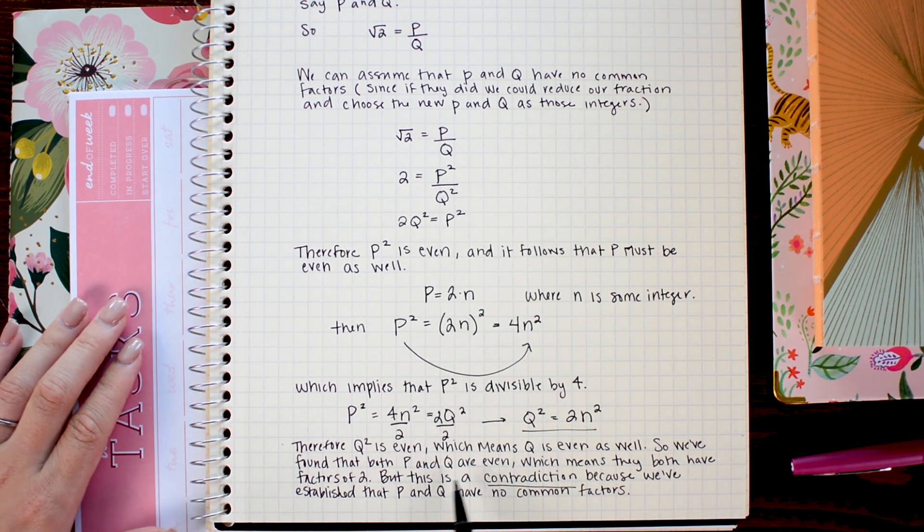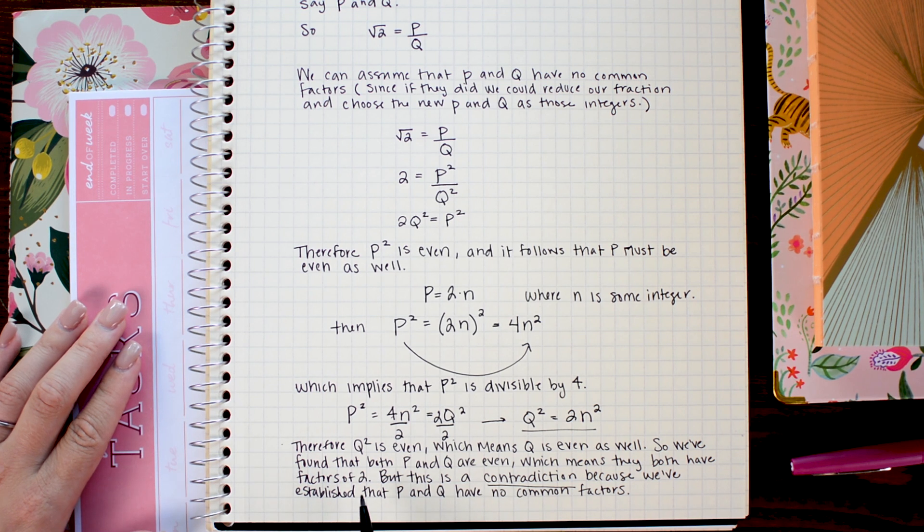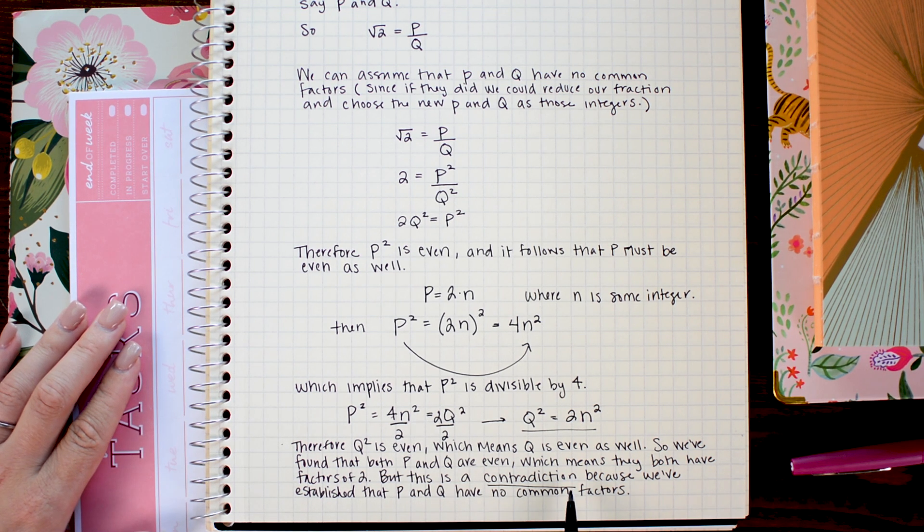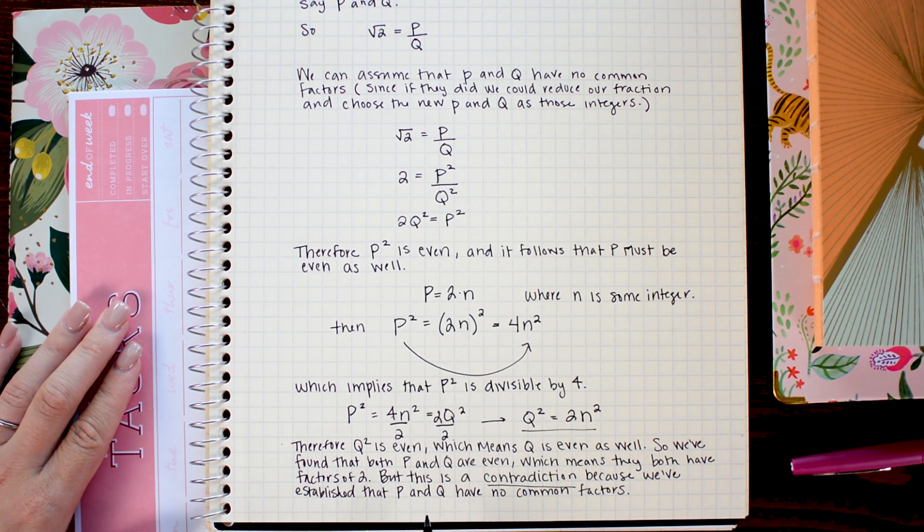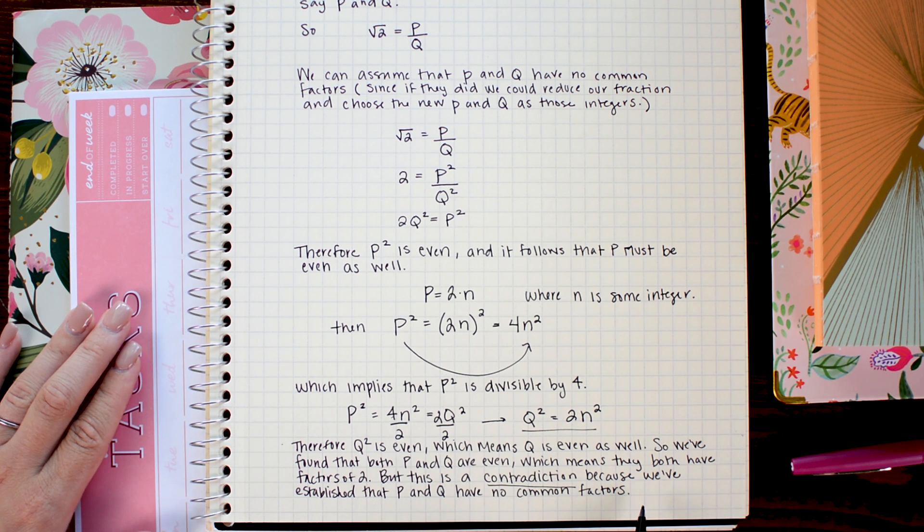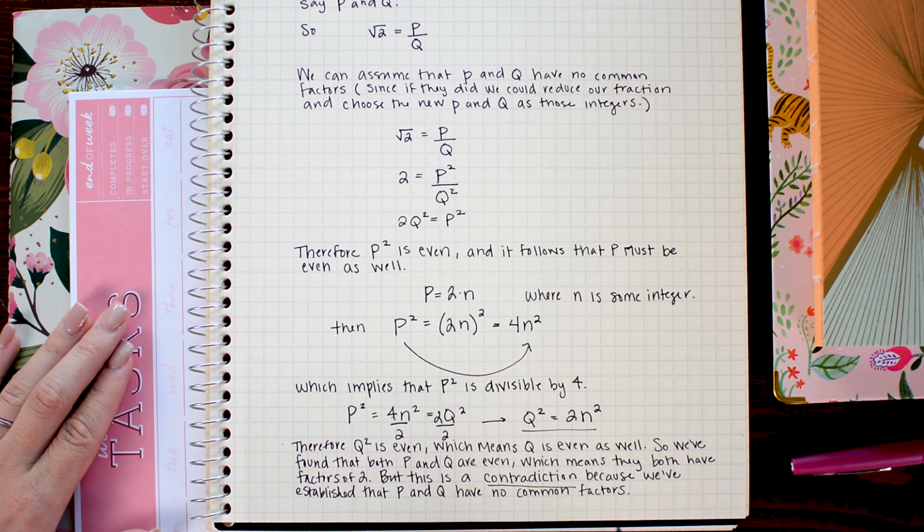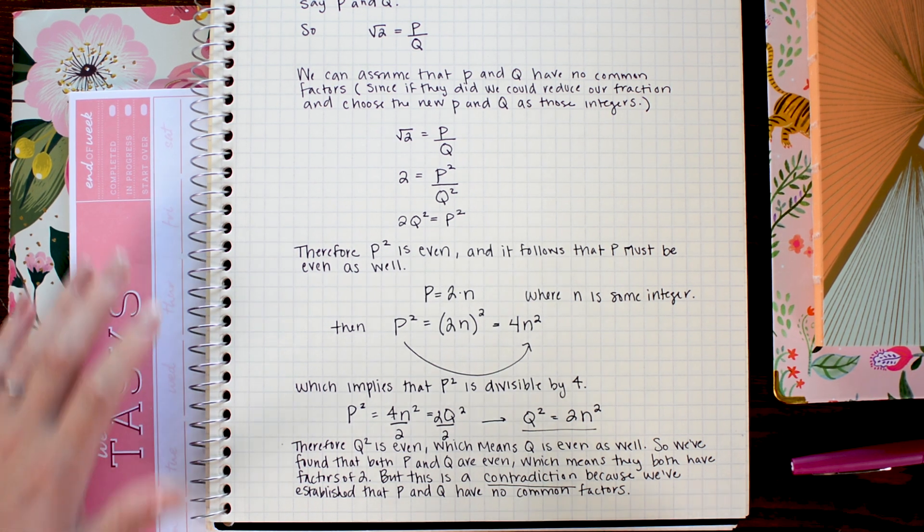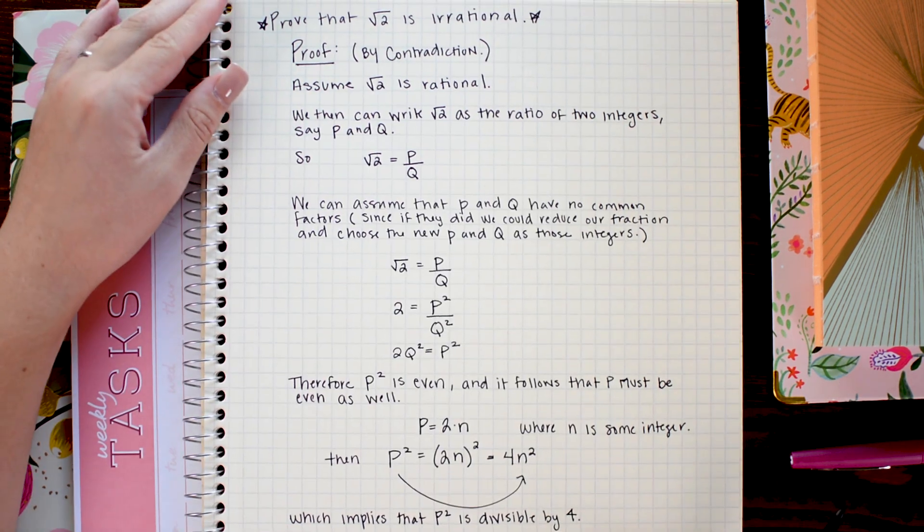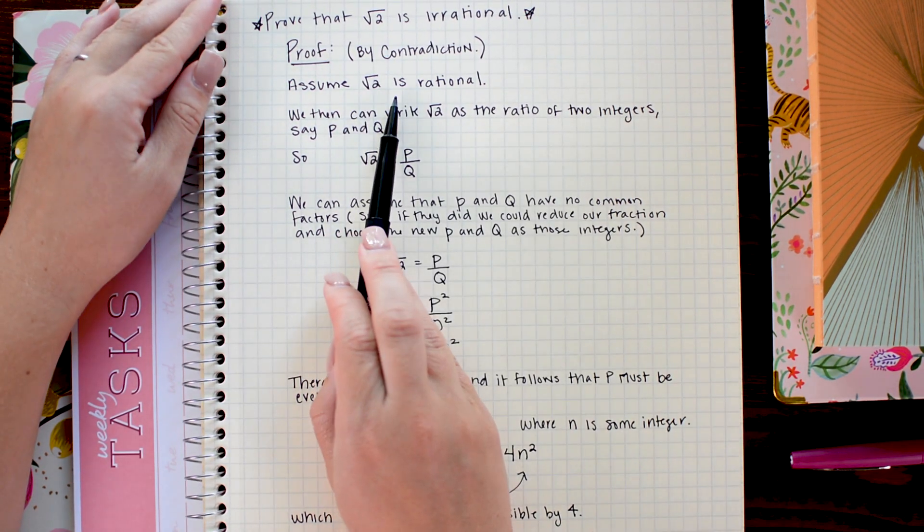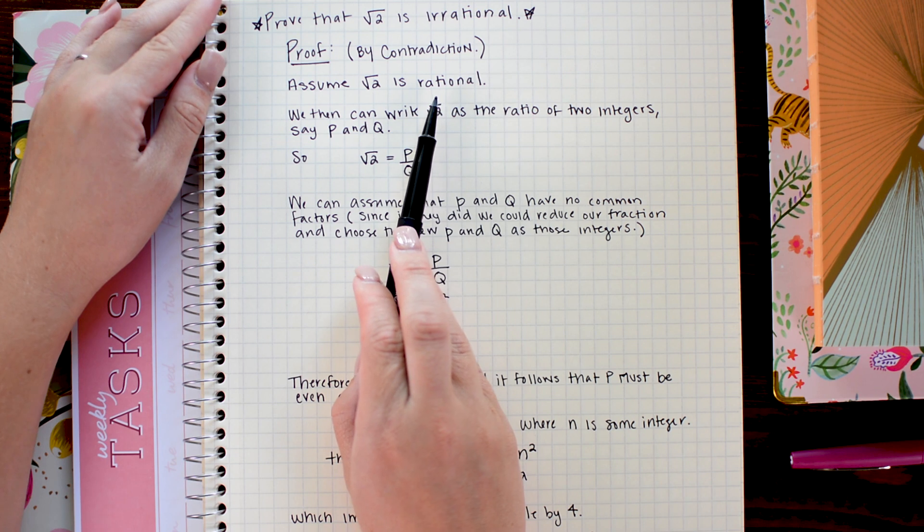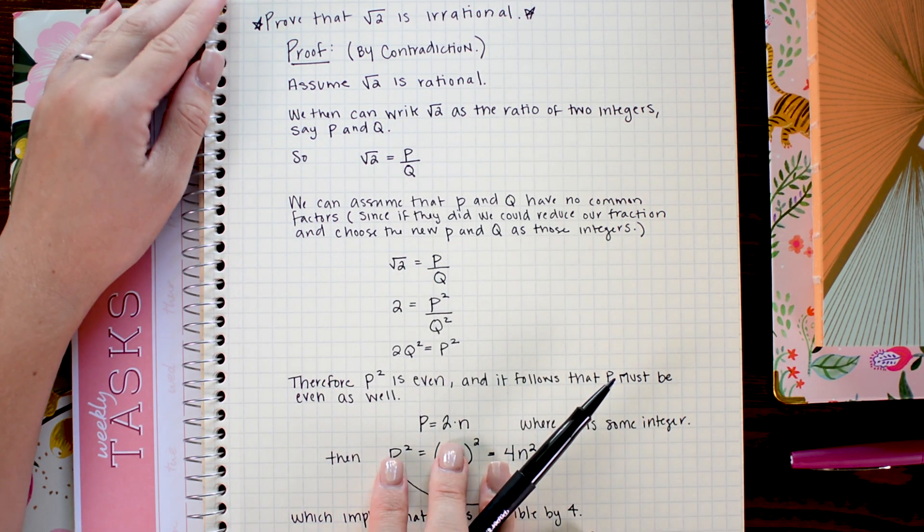So we have found that both p and q are even, which means they both have factors of 2. This is a contradiction because we have established that p and q have no common factors. Once you find your contradiction, you are now allowed to say that the opposite of your assumption is true. So we assumed that the square root of 2 is rational. Because we have made a contradiction to ourselves, we can now safely say that the square root of 2 is not rational,